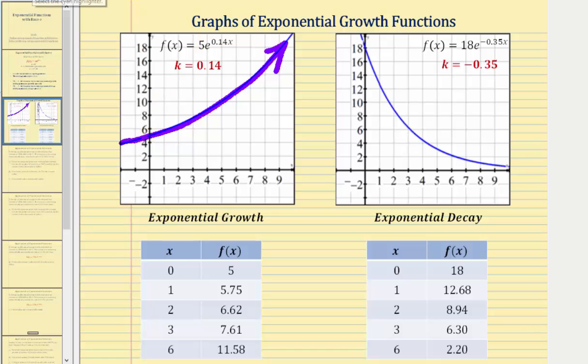Looking at the table of values, we can see that as x increases, the function values increase, and they're increasing at a continuous growth rate of 14%.